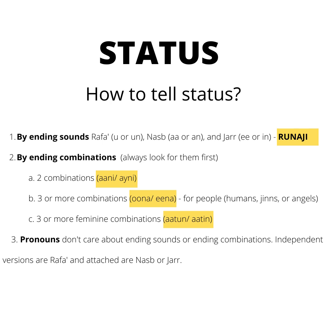We can tell status by ending sounds or by ending combinations. Ending sounds like U, An, or In; and ending combinations for two like Ani, Aini; three or more combinations like Una, Ina; and three or more feminine combinations like Atun and Atin. Pronouns don't care about ending sounds or ending combinations. Independent versions of pronouns are Rafa, and attached versions of the pronouns could be Nasab or Jar.